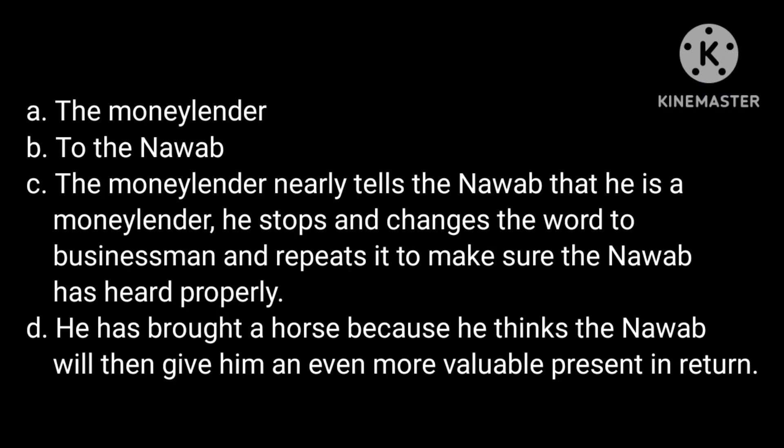The answers are: A. The moneylender. B. To the Nawab. C. The moneylender nearly tells the Nawab that he is a moneylender — he stops, changes the word to 'businessman', and repeats it to make sure the Nawab has heard properly. D. He has brought a horse because he thinks the Nawab will then give him an even more valuable present in return.